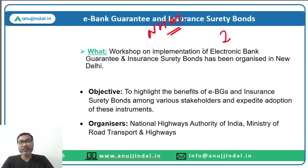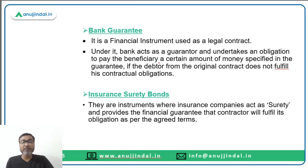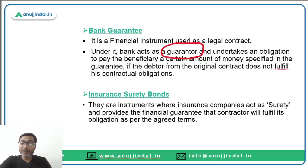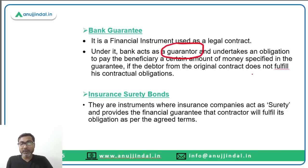The objective of this workshop was to highlight the benefits of e-bank guarantees and insurance surety bonds among various stakeholders. A bank guarantee is a financial instrument used as a legal contract under which a bank acts as a guarantor and undertakes an obligation to pay the beneficiary the amount specified in the guarantee if the debtor fails to fulfill their contractual obligation.